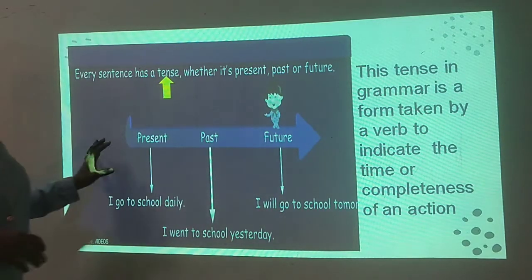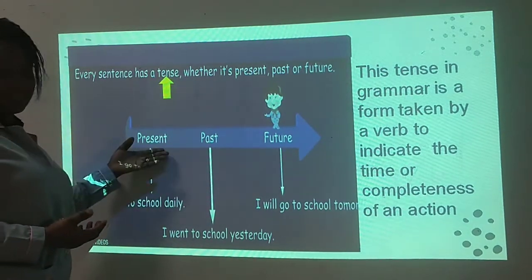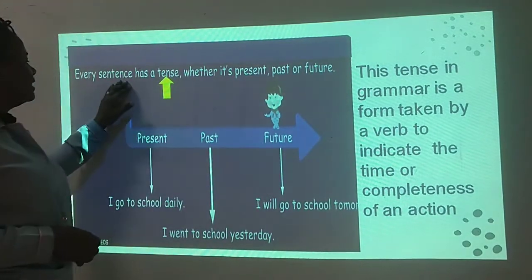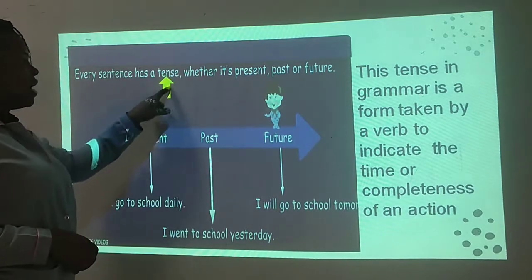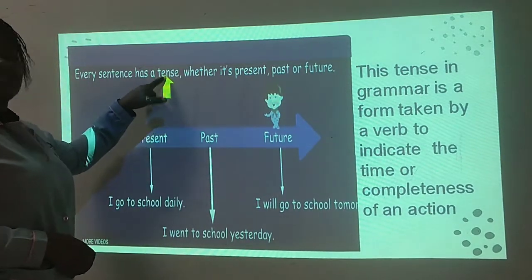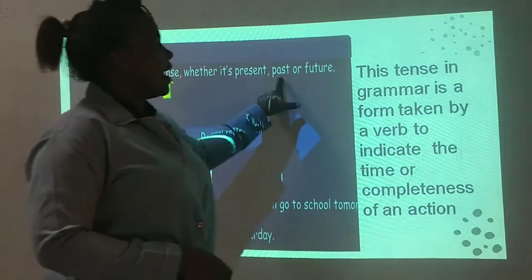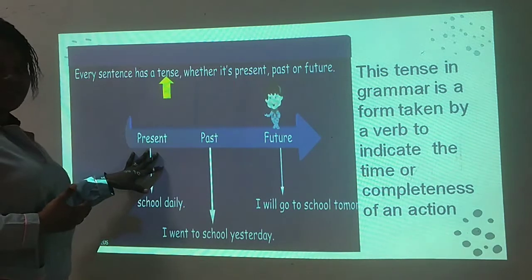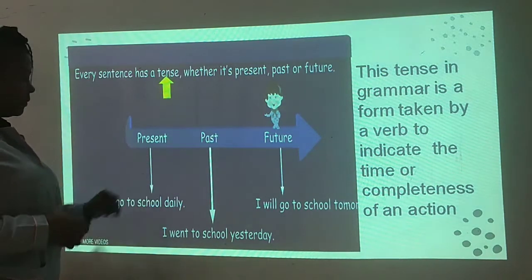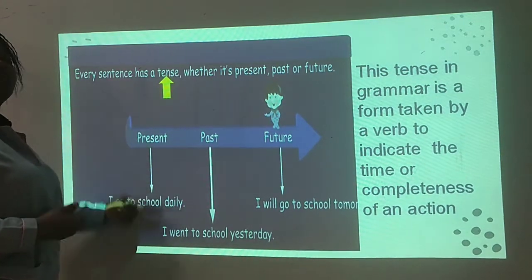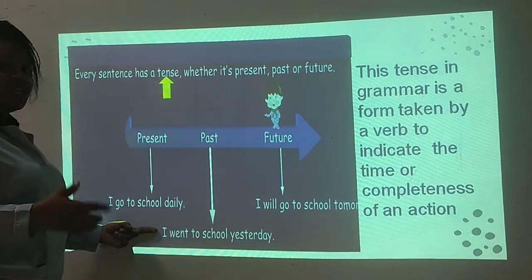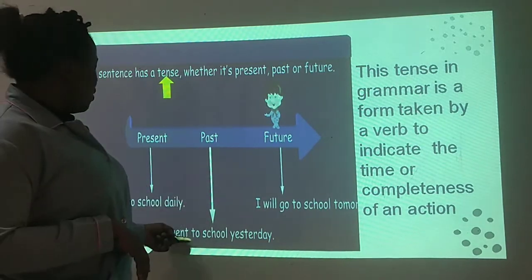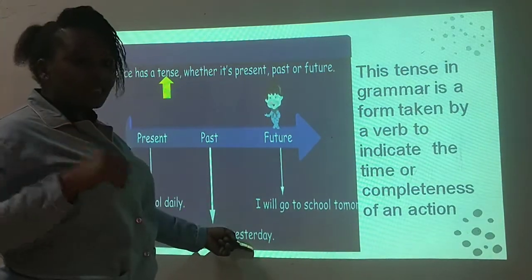Here is a little illustration that tells us about the present, the past, and the future. Every sentence has a tense. Look at the arrow indicating what each tense is about — whether it is present, past, or future. Now let's look at the present sentence: 'I go to school daily.' This is present — every day, you do it every day. The past: 'I went to school yesterday.' Concluded, it is already completed.